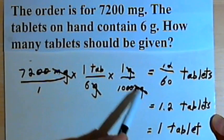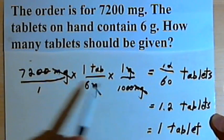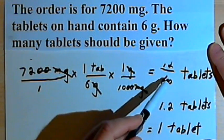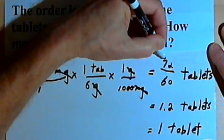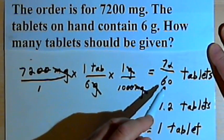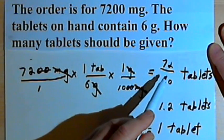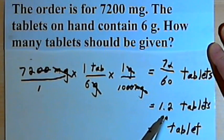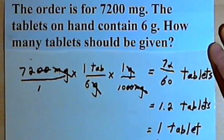I cancelled out all of the units that I could, I simplified as much as I felt like, multiplied across, and then took the fraction that I had left, and using a calculator, I would find out that that equaled 1.2 tablets. I would decide I could round that down and that would get me down to 1 tablet.